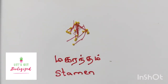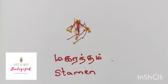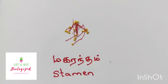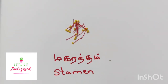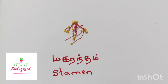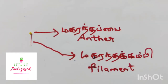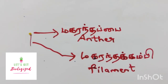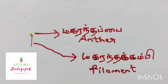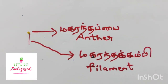And this is the stamen — the androecium, the male part of the flower. This is the part which produces pollen grains. This is a single stamen showing the anther and filament. The anther is attached with the filament.